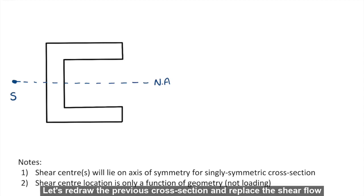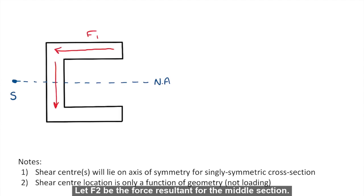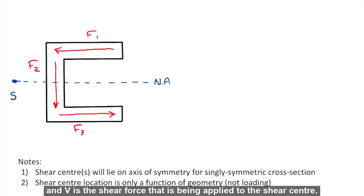Let's redraw the previous cross section and replace the shear flow with its corresponding force resultant. Let S represent the shear center. Let F1 be the force resultant for the top portion, F2 for the middle section, F3 for the bottom portion. And V is the shear force that is being applied to the shear center.